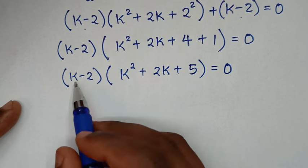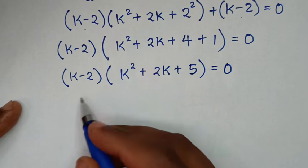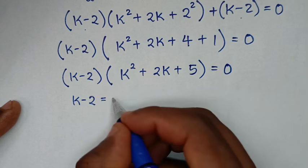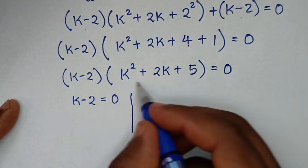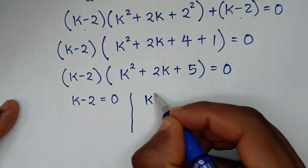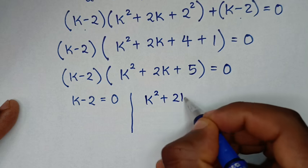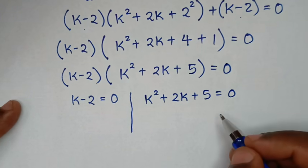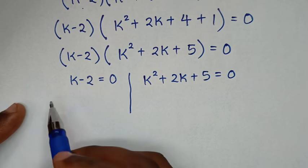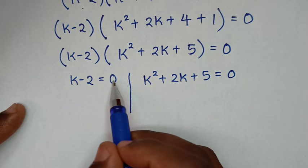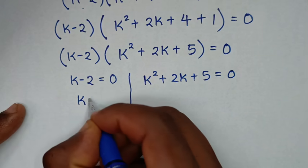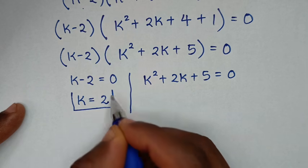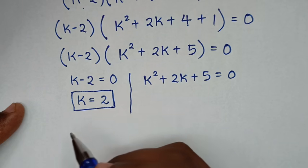From here we have two solutions. The first solution: k minus 2 is equal to 0. Taking negative 2 to the right side, k is equal to 2. This is the first value of k, which is a real solution.